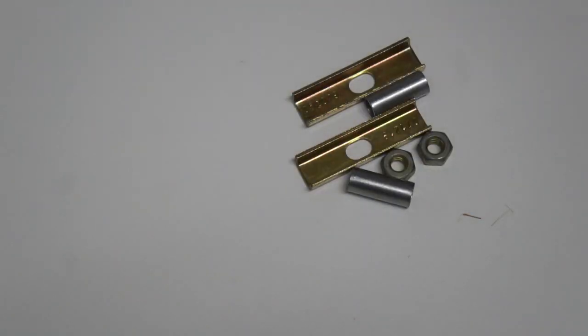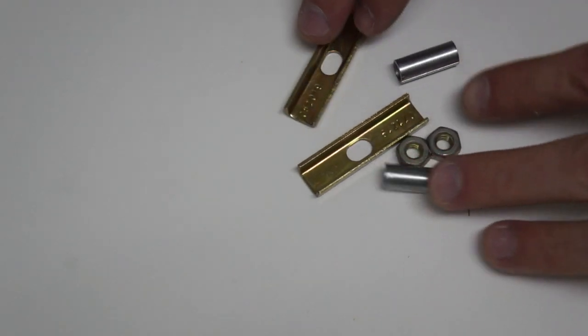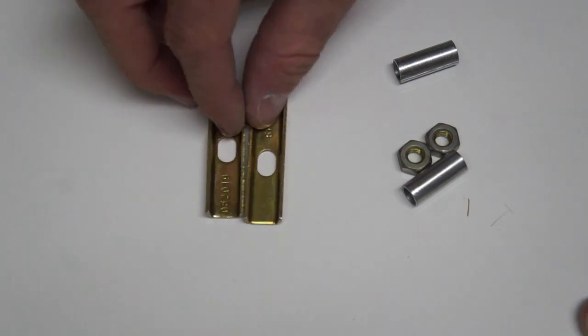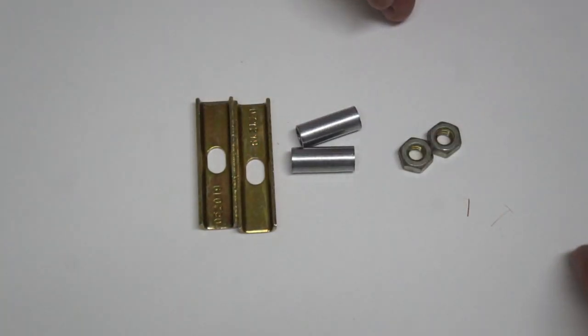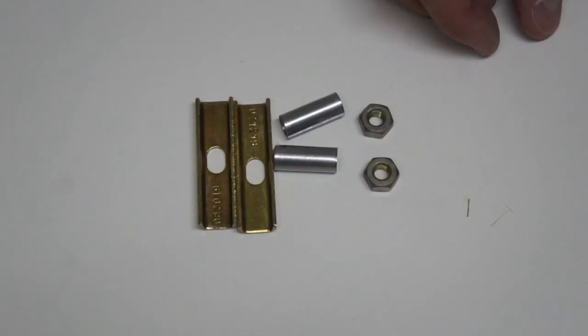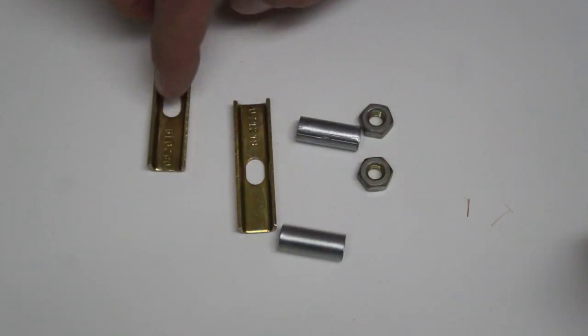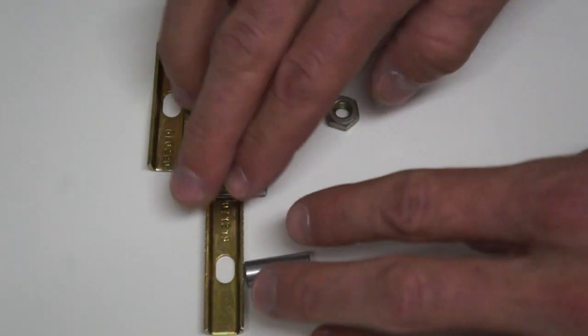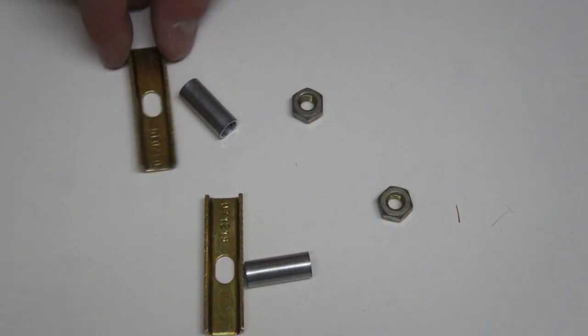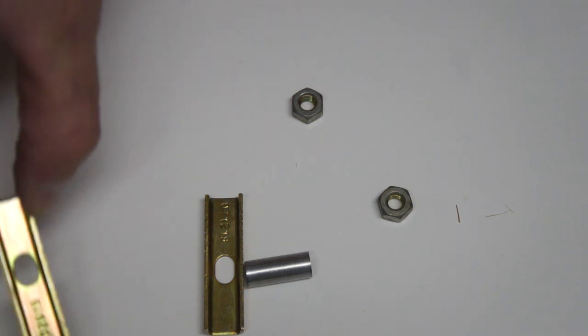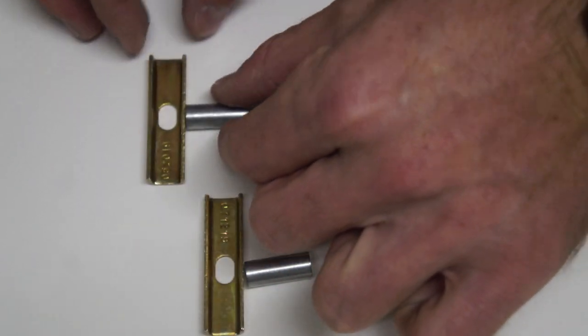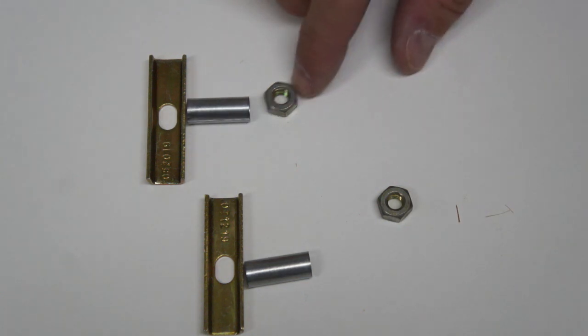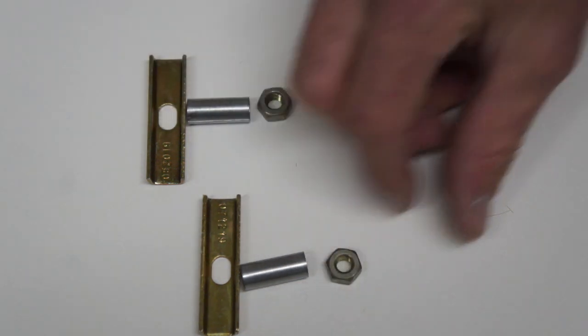When you open the bag of the nuts that hold on the bottom of the faucet, there are three different kinds of pieces. There's the long flat pieces, the two round tubes, and the two nuts. So you're going to do one of each on each side. This piece goes on first, then the little tube, and then the nut piece. You'll do that on each side.